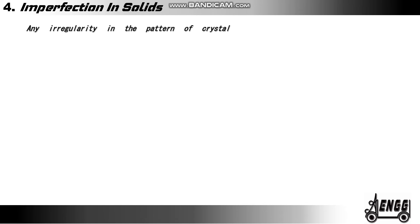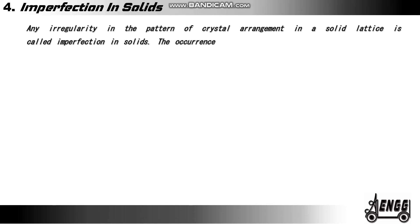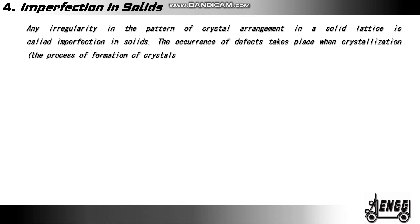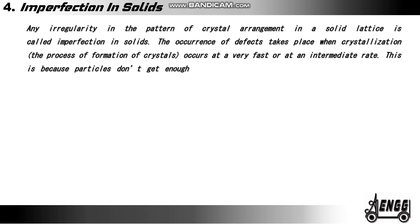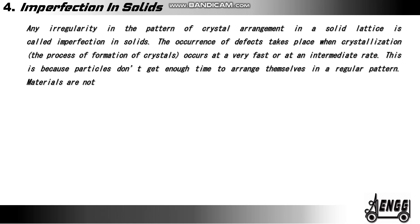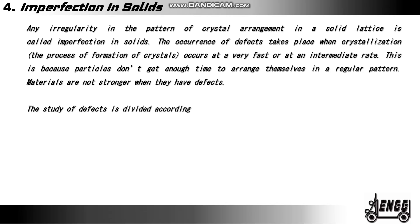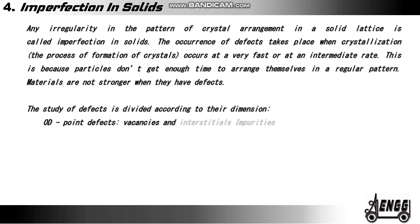Imperfection in solids. Any irregularity in the pattern of crystal arrangement in a solid lattice is called an imperfection in solids. The occurrence of defects takes place when crystallization occurs at a very fast or intermediate rate, because particles don't get enough time to arrange themselves in a regular pattern. Materials are not stronger when they have defects. The study of defects is divided according to their dimensions. Zero-dimensional (0D), that is point defects: vacancies and interstitial impurities.